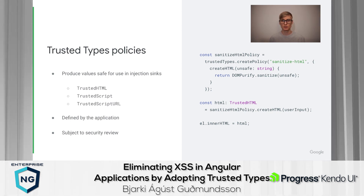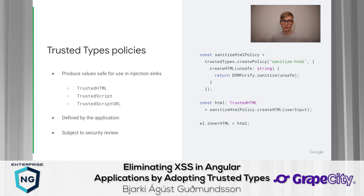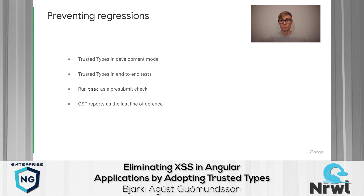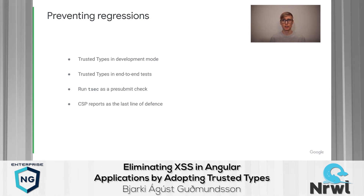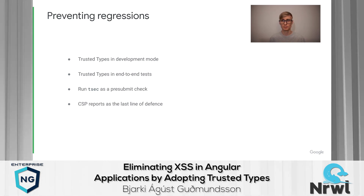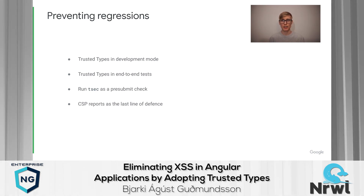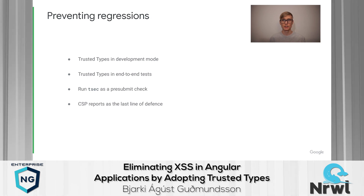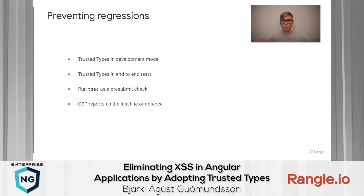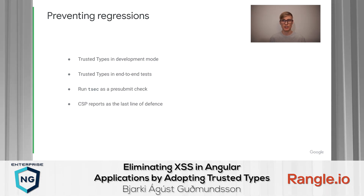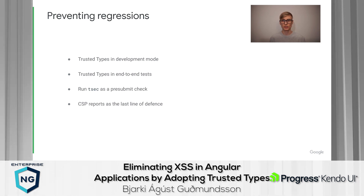In this way, trusted types forces any security-sensitive code into trusted types policies, and as a result, these policies must be scrutinized for security. Once all the violations have been fixed, trusted types can be enabled in production. Going forward, we must also ensure that no new trusted types violations appear. By enabling trusted types in Angular.json, it will be enabled in development mode, so developers should catch any new violations when developing a feature. The same applies for end-to-end tests, which should be run as part of your CI pipeline. TSEC, our static code analysis tool, can be added as a pre-submit check to your code repository. And in the unlikely case any violations make it into production, you will be notified through CSP reports.